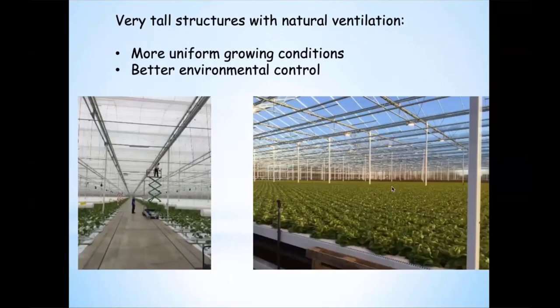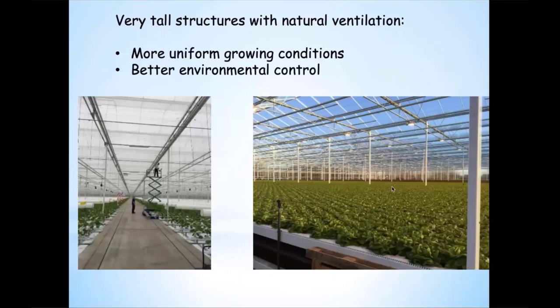One of the things we see around the world is bigger, taller structures. One picture is a lettuce crop in Belgium — it's 20 feet to the gutter. This is a low-profile crop growing on a single plane. The purpose for these bigger, taller structures is natural ventilation — you get better environmental control and better light distribution across the crop. You'll see structures 20 to 24 feet to the gutter even though a vine crop may only reach partway up. On the left you'll see a cucumber house where plants are only 8 to 12 feet high, but the gutter height is much higher — again, just for environmental control.